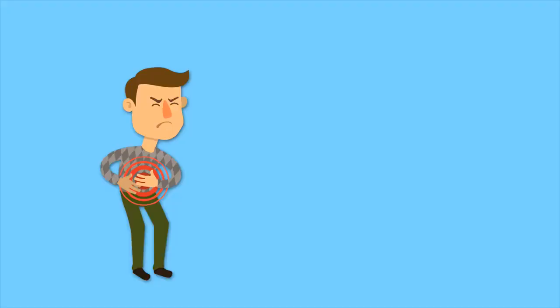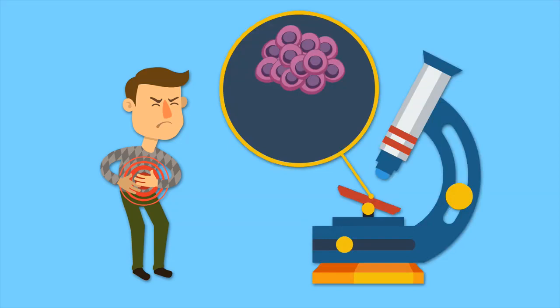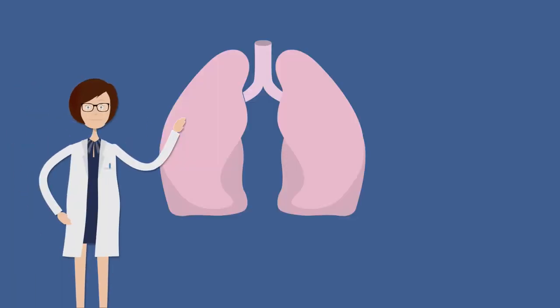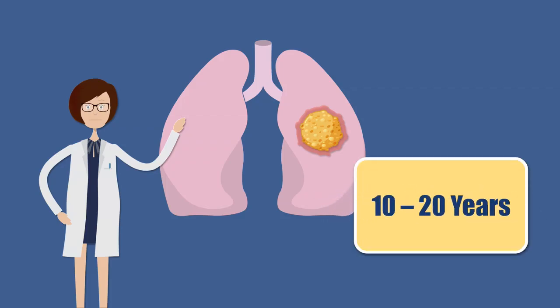Generally, a patient doesn't become symptomatic until there are about one to two billion cancer cells in the body. That's usually when tumors can be detected. Take lung cancer, for example. From the moment the first cancer cell appears in the body until it can be detected, the lung cancer would have been developing for 10 to 20 years.